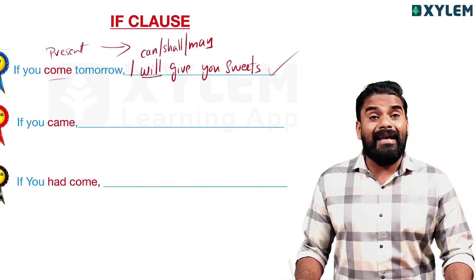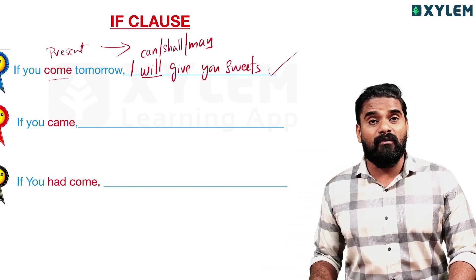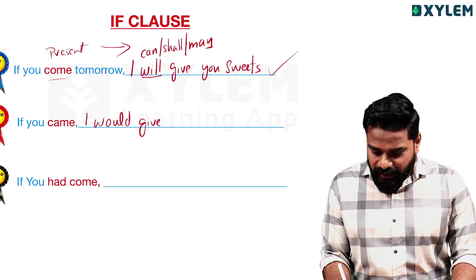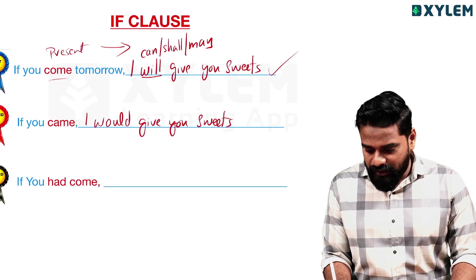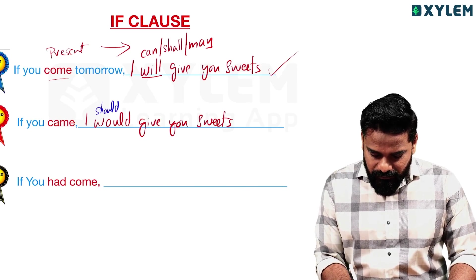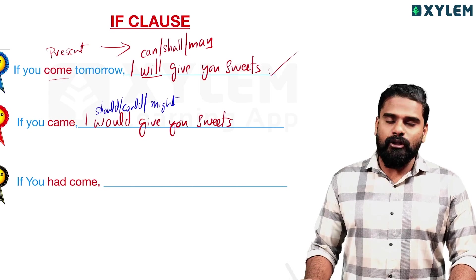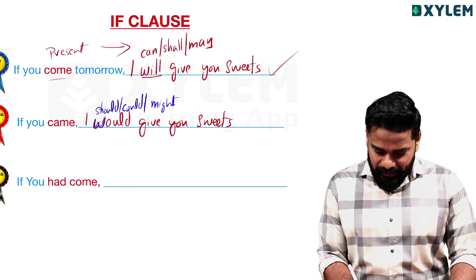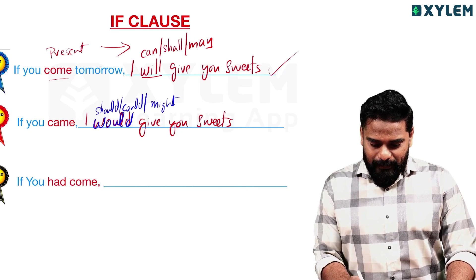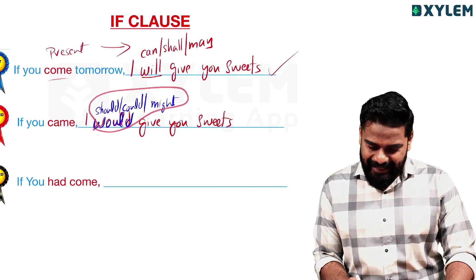Second condition: 'If you came' — past tense. The main clause answer uses would, should, could, or might: 'I would give you sweets,' 'I could give you sweets,' 'I might give you sweets.' So: if clause = past tense; main clause = would/should/could/might.